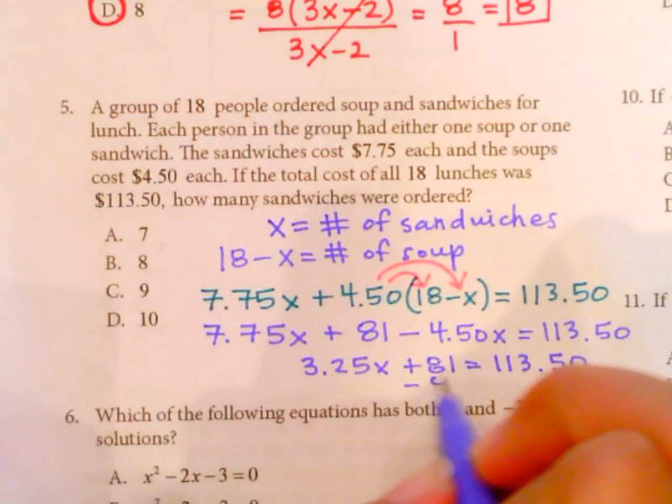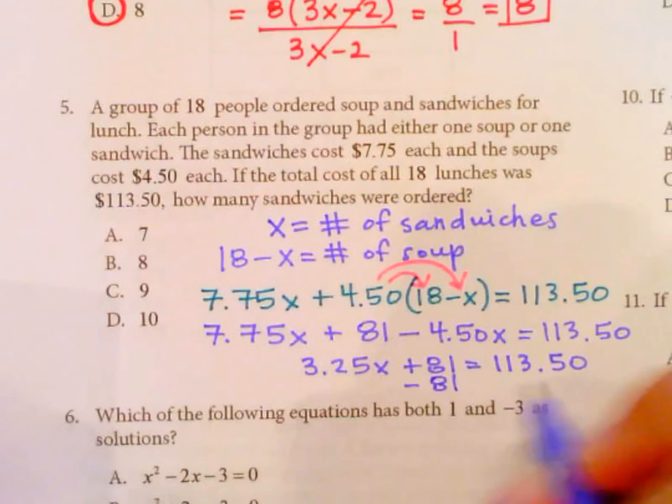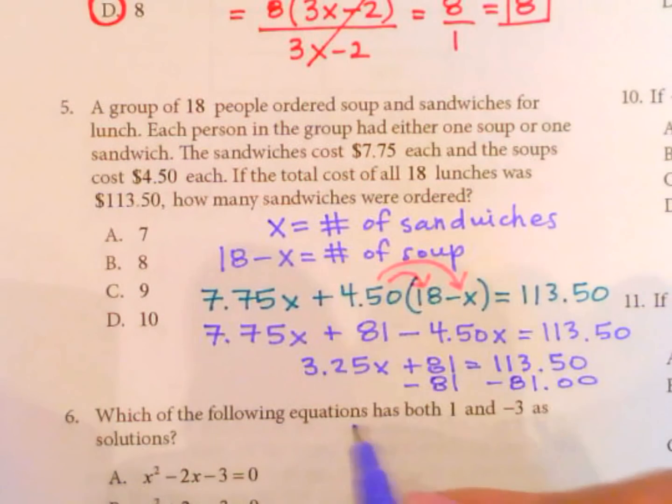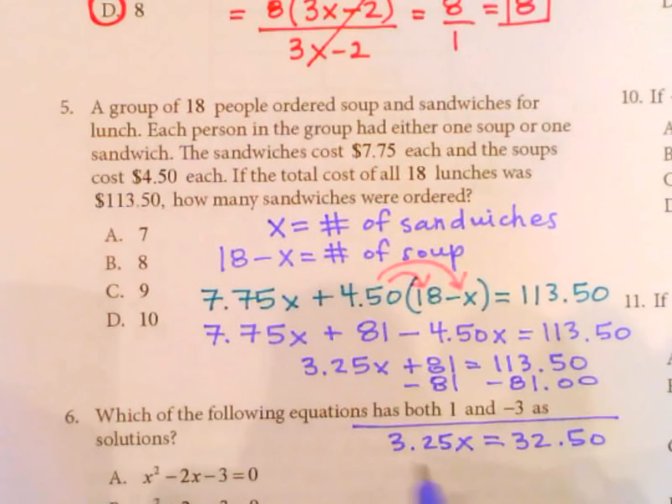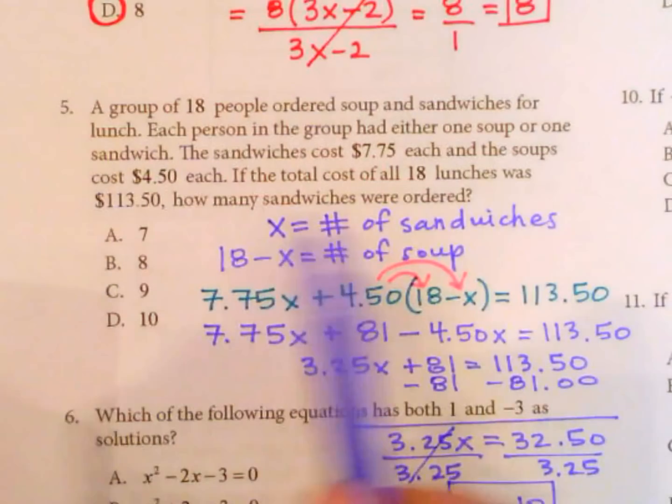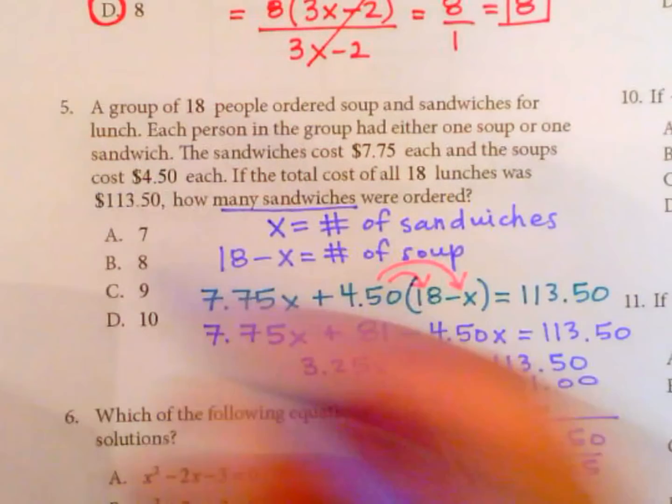Continuing to solve for x, we need to get the x by itself. So I'm going to subtract $81. Subtract $81. $113.50 minus $81, I'm just going to continue down here, equals $32.50. And then I still have my $3.25x over here. To find x, I need to divide by $3.25. So this will cancel out to 1. And I've got x equals $32.50 divided by $3.25 equals 10. So that's what we're looking for. How many sandwiches were ordered? 10. D.